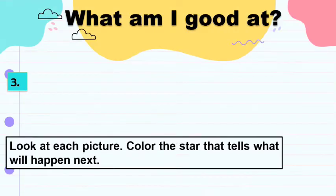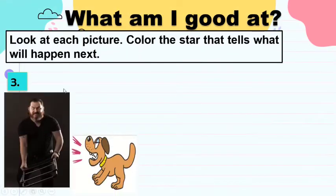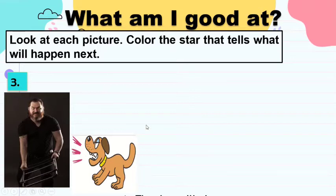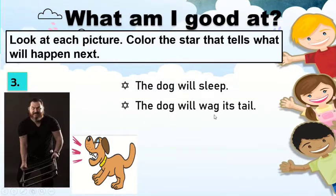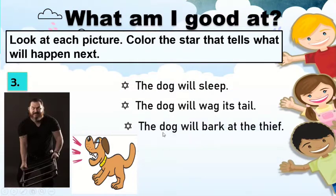How about number 3? Look at this picture. What do you think will happen next? The dog will sleep. The dog will wag its tail. The dog will bark at the thief. Very good! The answer is the dog will bark at the thief.